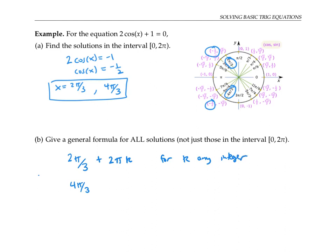Similarly, I can write four pi over three plus two pi k to capture all solutions based on the principal solution four pi over three by adding and subtracting multiples of two pi. This is my final solution.